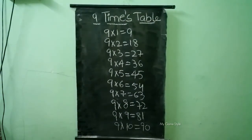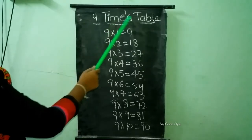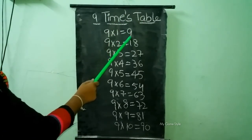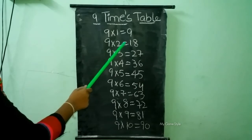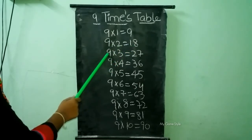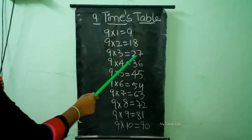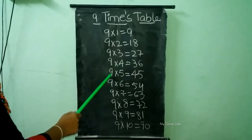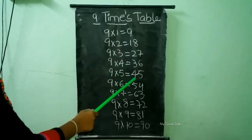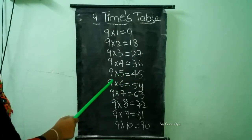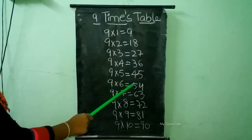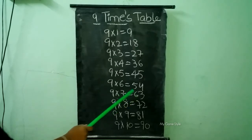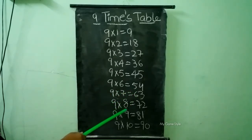9 times table. 9 times 1 is equal to 9. 9 times 2 is equal to 18. 9 times 3 is equal to 27. 9 times 4 is equal to 36. 9 times 5 is equal to 45. 9 times 6 is equal to 54. 9 times 7 is equal to 63. 9 times 8 is equal to 72.